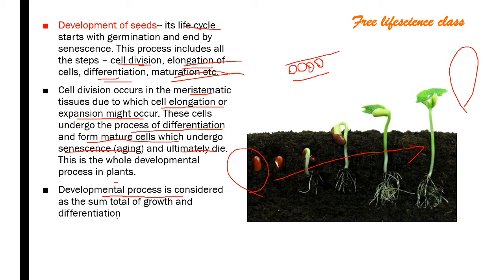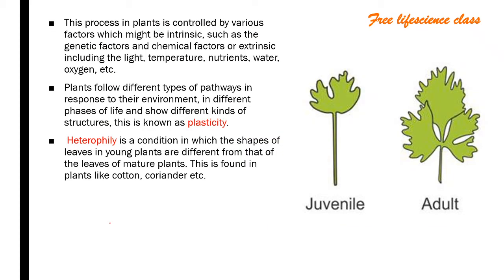This is the whole developmental process that takes place in a plant. Development is considered as the sum total of growth and differentiation — so: development = growth plus differentiation.